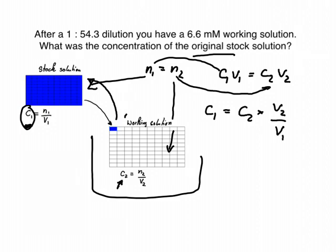So now we know c2—we know our concentration, this was the 6.6 millimolar—but what is this v2 over v1? Well, it says we did a 1 in 54.3 dilution.